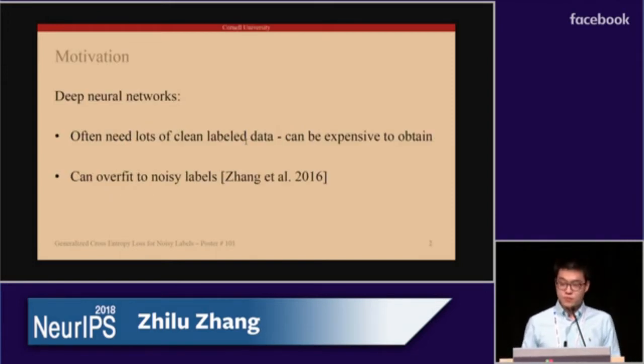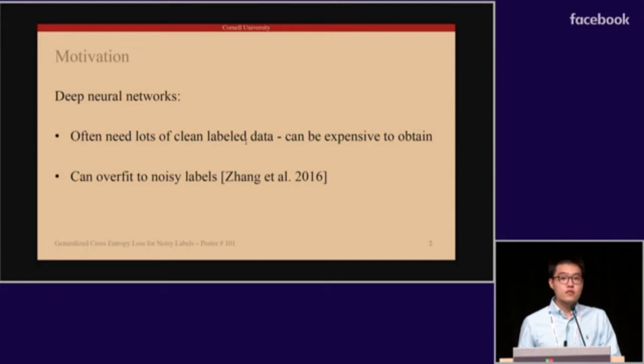Deep neural networks have achieved tremendous success in numerous tasks. However, they often require a large amount of clean-labeled data, which can be very expensive to obtain. Moreover, it has been recently demonstrated that training neural networks with the widely used cross-entropy loss can lead to significant overfitting to noisy labels. In light of this, we proposed a loss function for training neural networks with noisy labels.